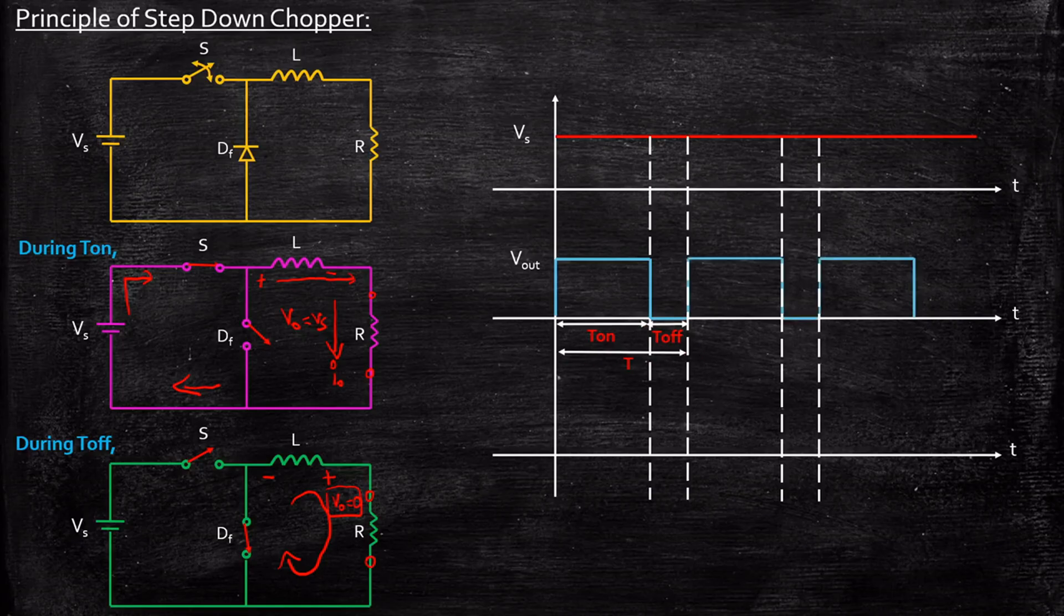This is nothing but Ton and this is nothing but Toff and overall is nothing but T. Again, the cycle repeats in this particular case. Basically, what you are doing, you are just chopping off the source voltage waveform, Vs. You are going to get a waveform like this.